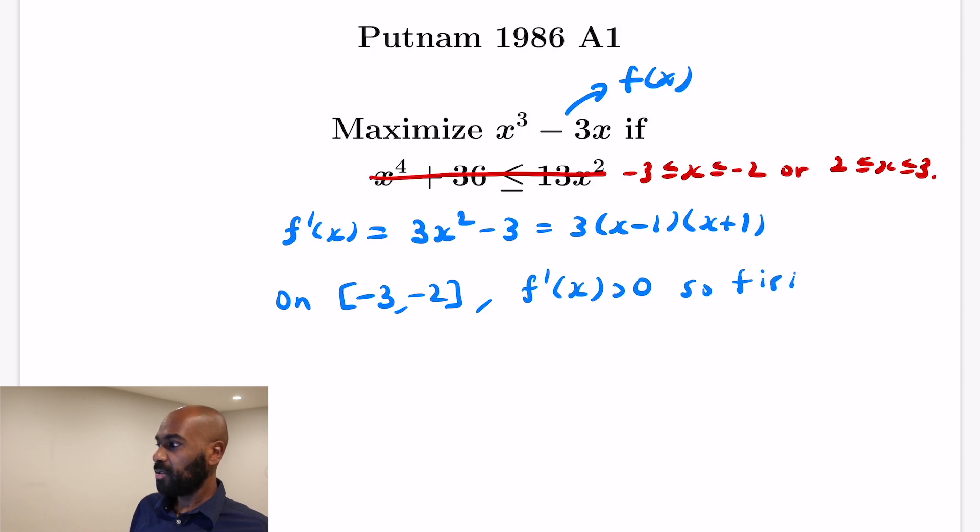Okay, so that gives us some information about where a potential maximum is in the union of those two intervals. We'll have to check the largest value of x in the interval and what the value of f(x) is at that point.